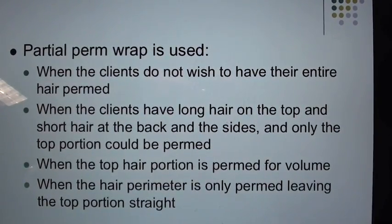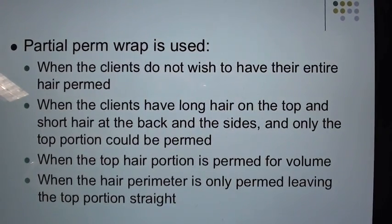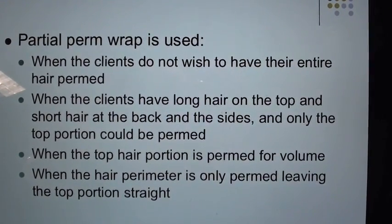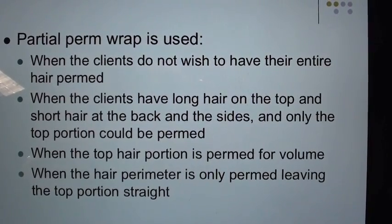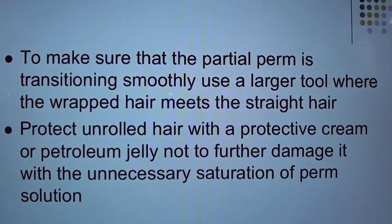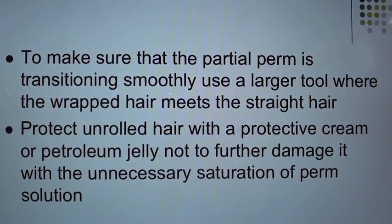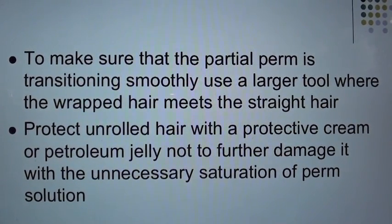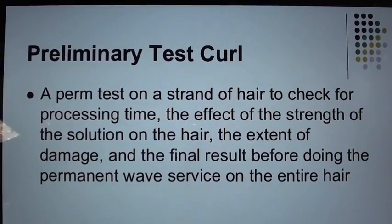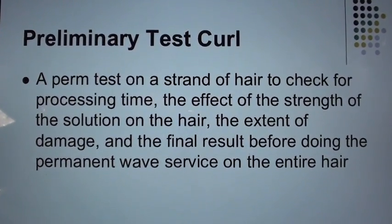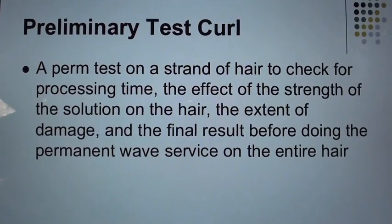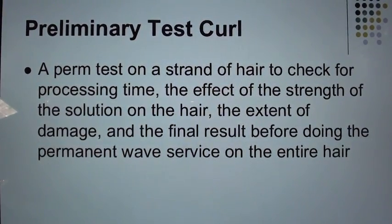Partial perm wrap is used when clients do not wish their entire hair permed — for example, when clients have long hair on top and short hair at the back and sides, when only the top is permed for volume, or when only the perimeter is permed leaving the top straight. To ensure a smooth transition, use a larger tool where wrapped hair meets straight hair. Protect unpermed hair with protective cream or petroleum jelly to avoid unnecessary saturation with perm solution. Preliminary test curl: A perm test on a strand of hair to check for processing time, the effect of solution strength, the extent of damage, and the final result before doing the service on the entire head.